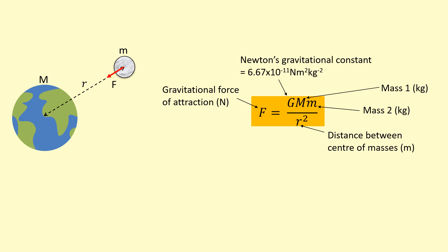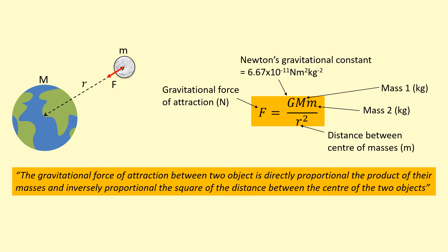Newton's law of gravitation can also be written in words: the gravitational force of attraction between two objects is directly proportional to the product of their masses, and inversely proportional to the square of the distance between the centers of the two objects. And if there's a force F on the Moon, according to Newton's third law there's going to be an equal and opposite force on the Earth, in the opposite direction.